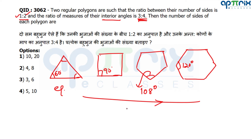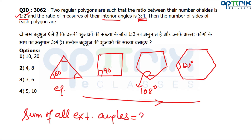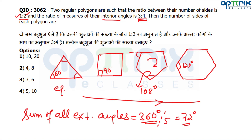Another useful result: for any polygon, the sum of all exterior angles is 360 degrees. For example, in a pentagon there are 5 exterior angles, each equal to 360/5 = 72 degrees. The interior angle is 180 minus 72 = 108 degrees. You should know the interior angles for triangle, square, pentagon, and hexagon. If you don't, you can always derive them this way.